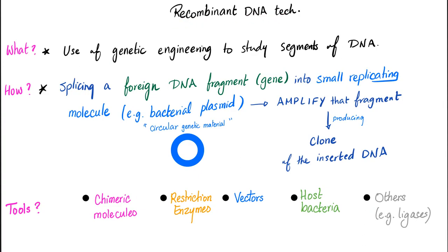Now let's talk about recombinant DNA technology. What is that? We use genetic engineering to study segments of your DNA. How do you do it? Splice foreign DNA fragments — these are genes, because a gene is a piece of the DNA — and then cut them into small pieces. These are called replicating molecules. An example is the bacterial plasmid, which is a circular genetic material. Then amplify this fragment and clone it using the bacterial machine. The tools include chimeric molecules, restriction enzymes, vectors, host bacteria, and others.